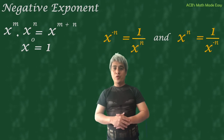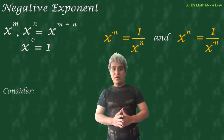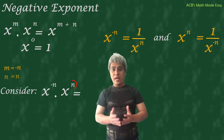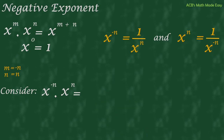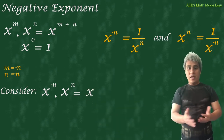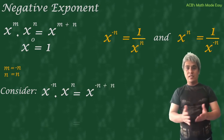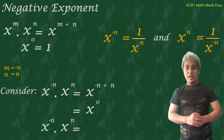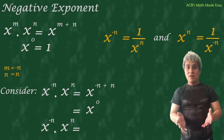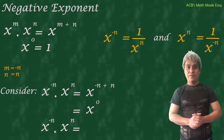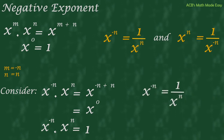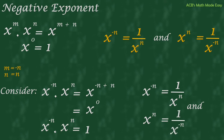We are now going to prove the law on negative exponents. Consider x raised to negative n times x raised to n. Here the value of m is negative n and the value of n is n. Using the multiplication formula: x raised to negative n plus n equals x raised to 0, because negative n plus n is 0. So x raised to negative n times x raised to n equals x raised to 0, which equals 1. Cross-multiplying gives us: x raised to negative n equals 1 over x raised to n, and x raised to n equals 1 over x raised to negative n.